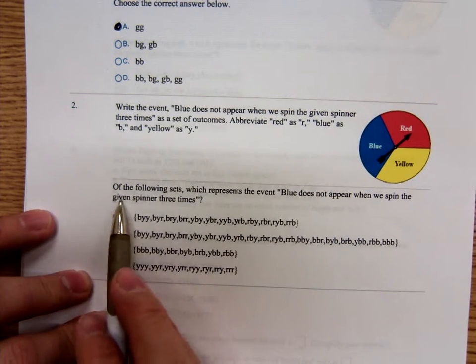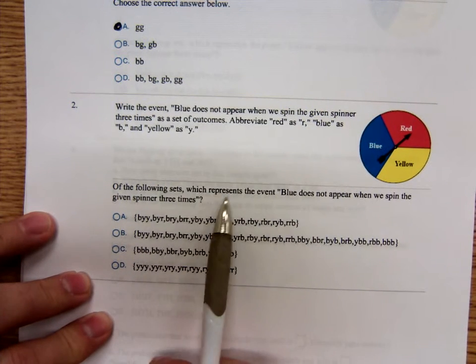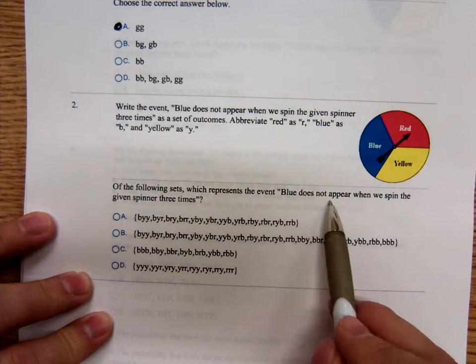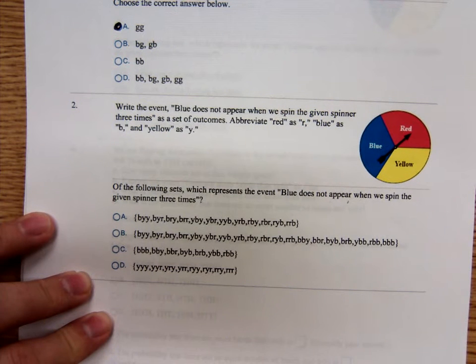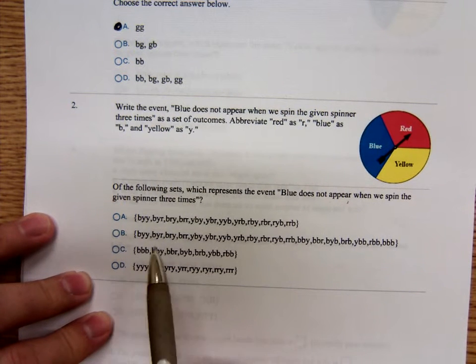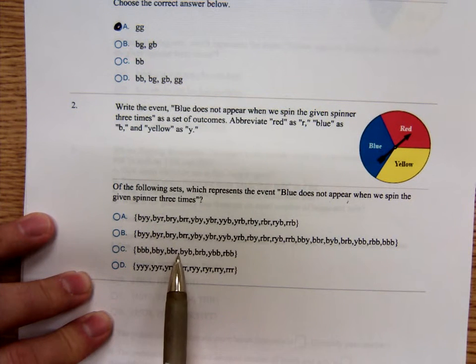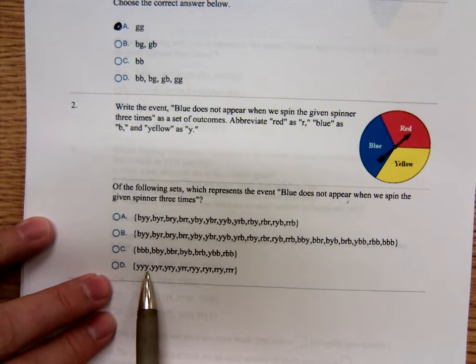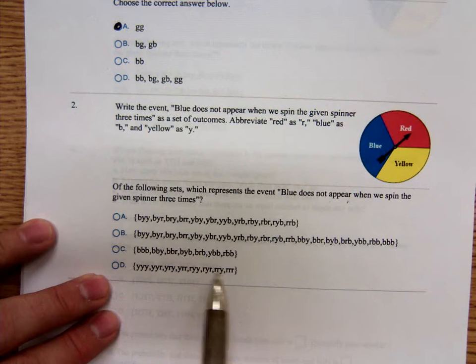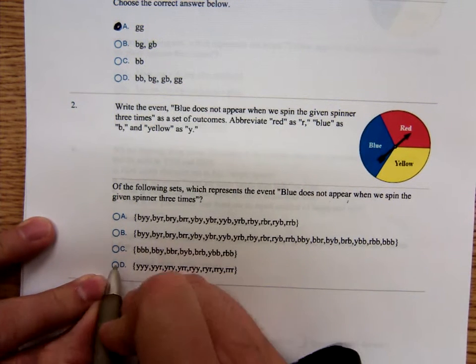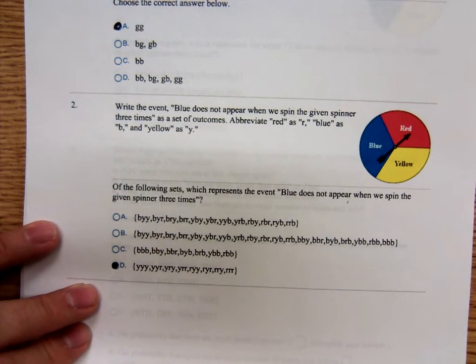Which of these mean, which of these, of the following set, which represent the event? Blue does not appear when we spin the given spinner three times. Well, blue doesn't appear. If you look at these answer choices for A, B, and C, blue is appearing in these. What about D? Three yellows, two yellows, and a red. Is D the only one where no blues appear? Yeah. There's the outcomes. D.